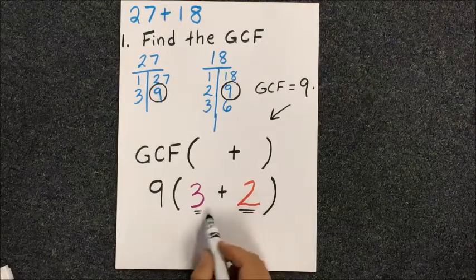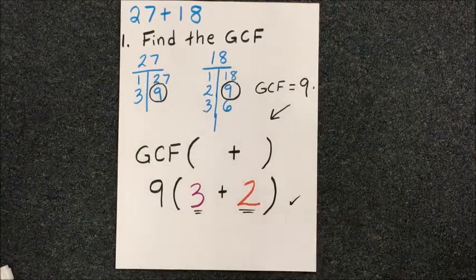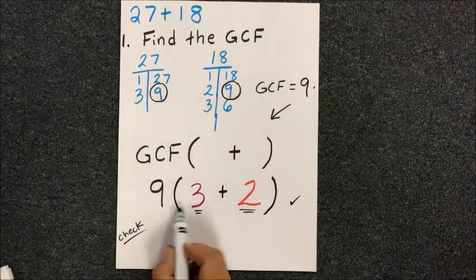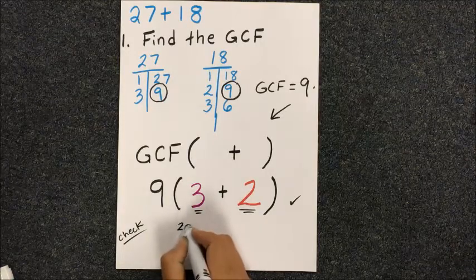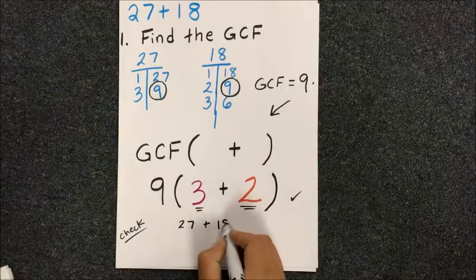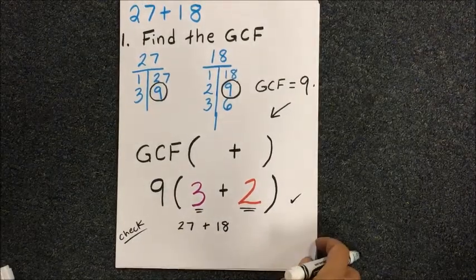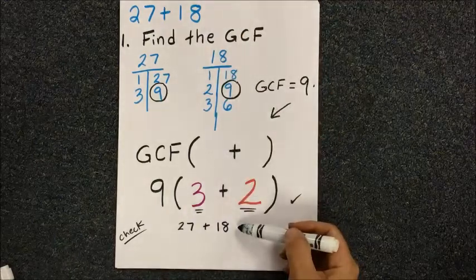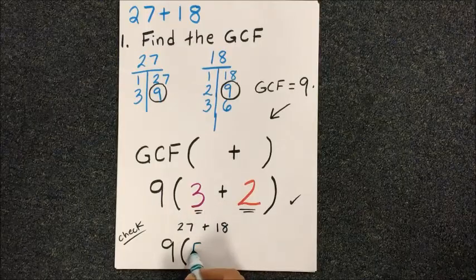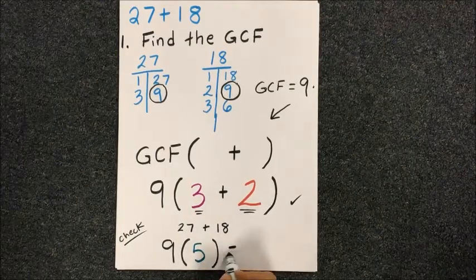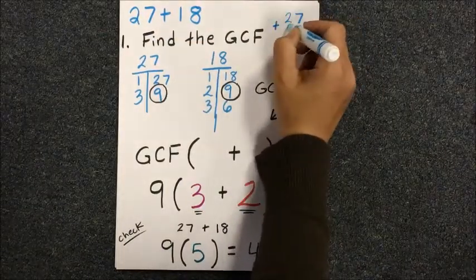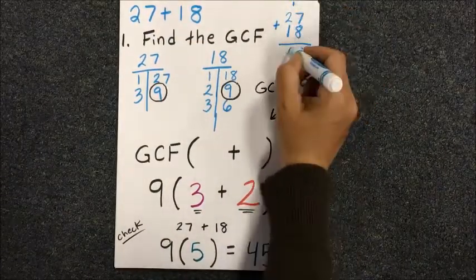We always want to check our work. Parentheses means to multiply, so 3 times 9 is 27, keep the addition, and 9 times 2 is 18, which is our original addition problem. You can also add the inside numbers to give you 5, and if you multiply that out you get 45. Another check is to add the original numbers together and you will get 45.